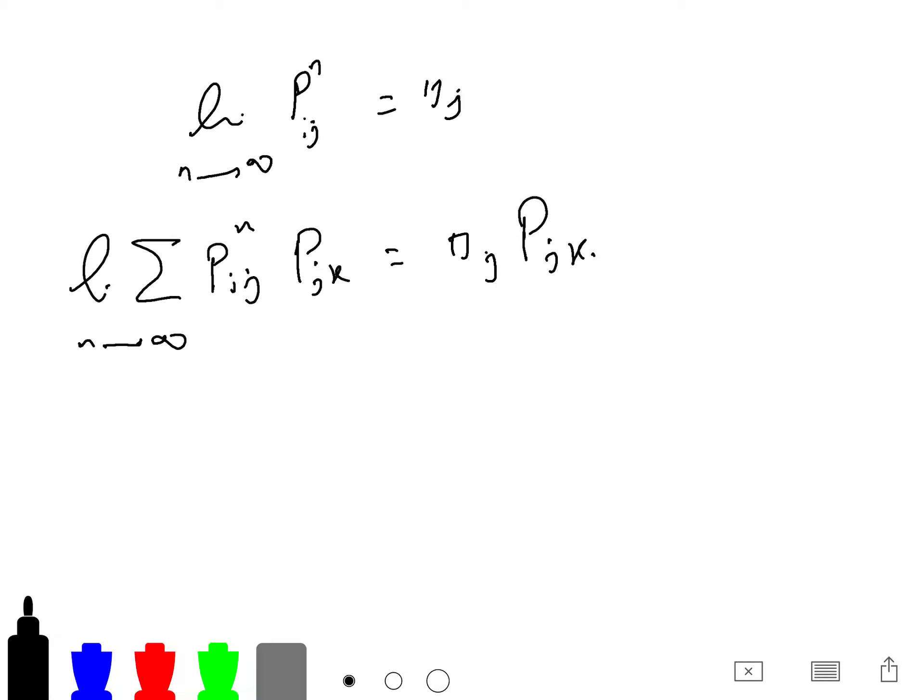So until now, everything is crystal clear. And then this part is just a limit of pik n plus 1, and I just described it. So it will go to pi k when n goes to infinity. And so pi k is equal to pi j pjk.